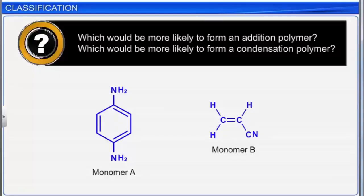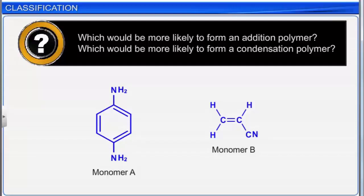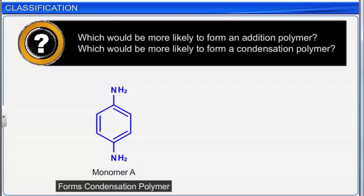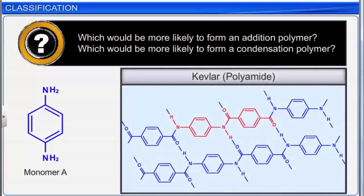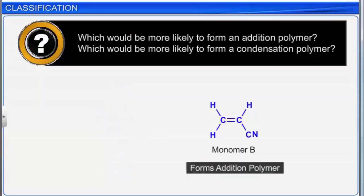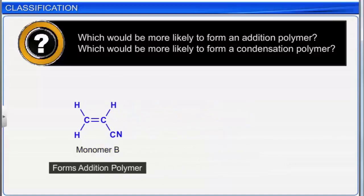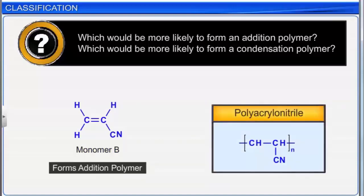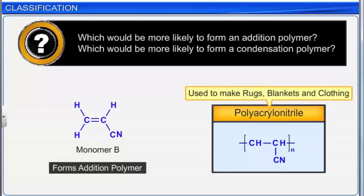Consider two monomer structures: Monomer A would form a condensation polymer. It is one of the two components of Kevlar, a polyamide. Monomer B has a carbon-carbon double bond, so it forms an addition polymer. Monomer B is a monomer of polyacrylonitrile, which is used to make rugs, blankets, and clothing.